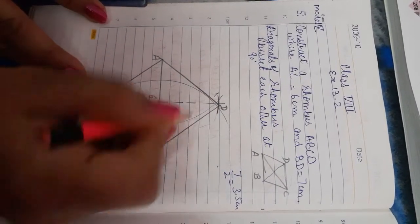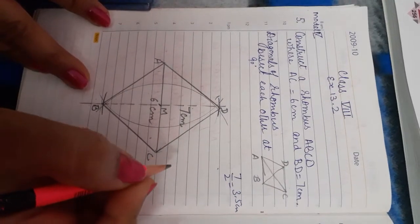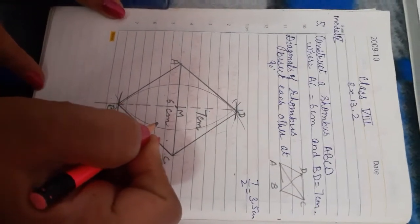And we find rhombus ABCD with two diagonals: AC is six centimeter and BD is seven centimeter. I hope this question is clear to you. Thank you.